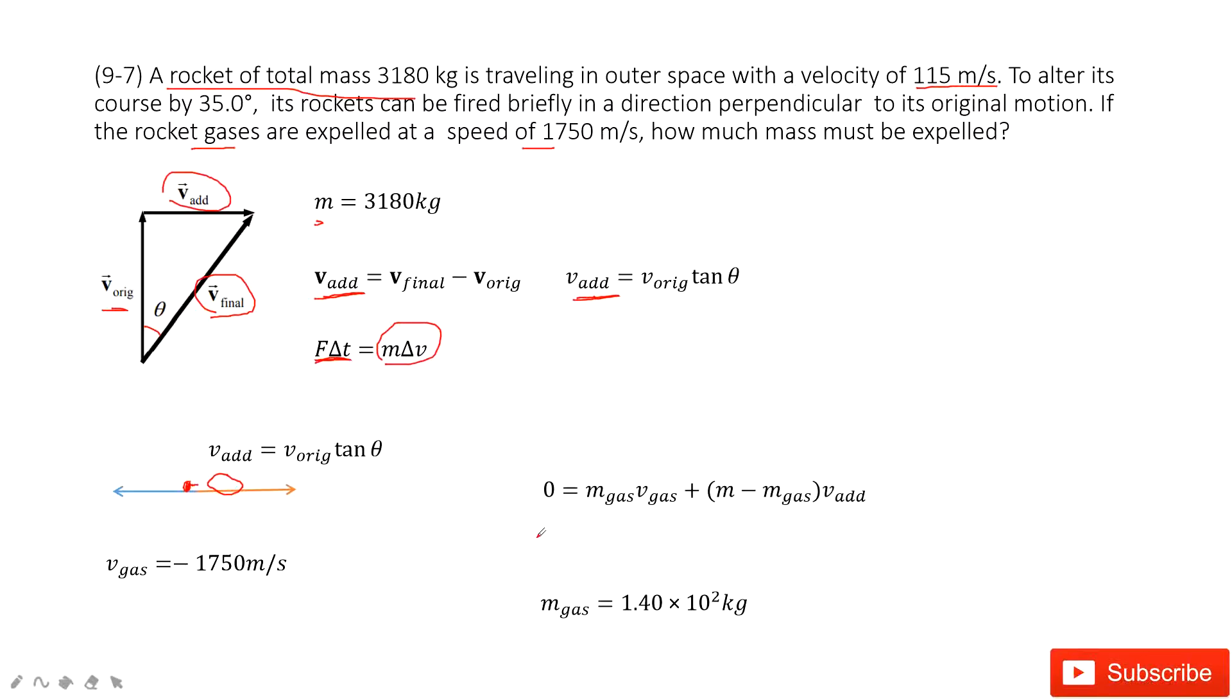So the momentum is conserved. So that means initially at the horizontal component, the momentum is zero. Because no force is acting on it. Initially, we only had the velocity in the original direction, right? So in the horizontal direction, it's zero.